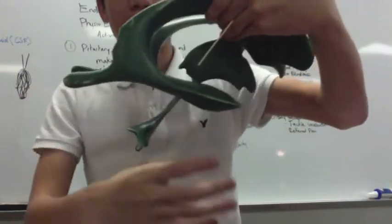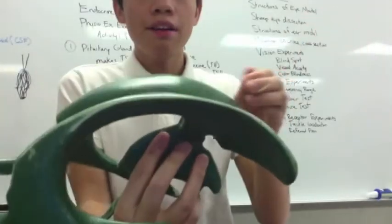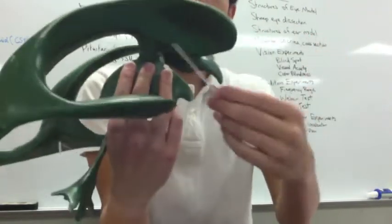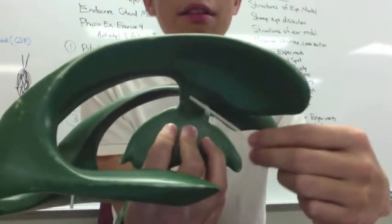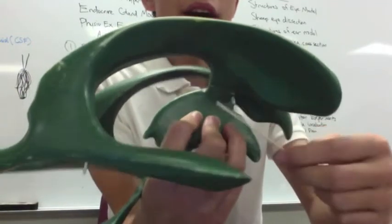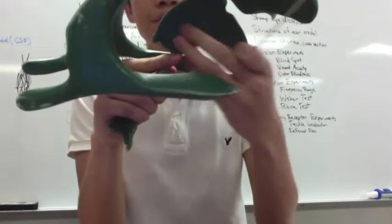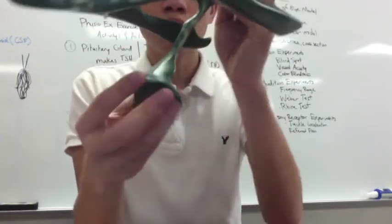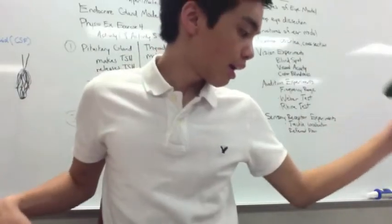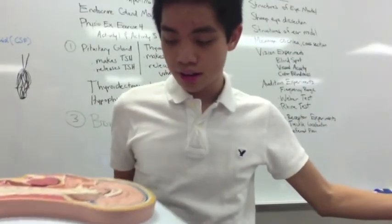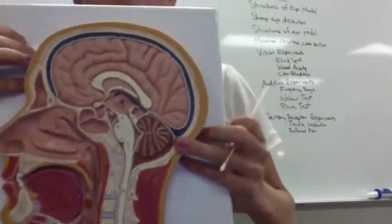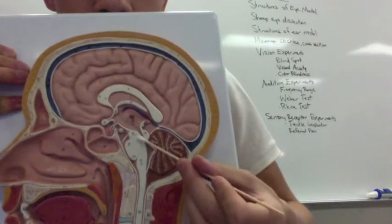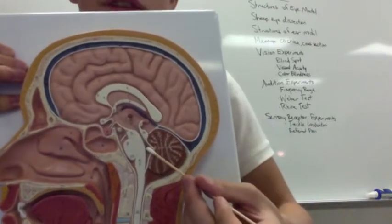Here are your lateral ventricles. Then you have your interventricular foramen, which leads down into your third ventricle. From there, your cerebral aqueduct goes into your fourth ventricle. So the flow goes: lateral ventricles → interventricular foramen → third ventricle → cerebral aqueduct → fourth ventricle.